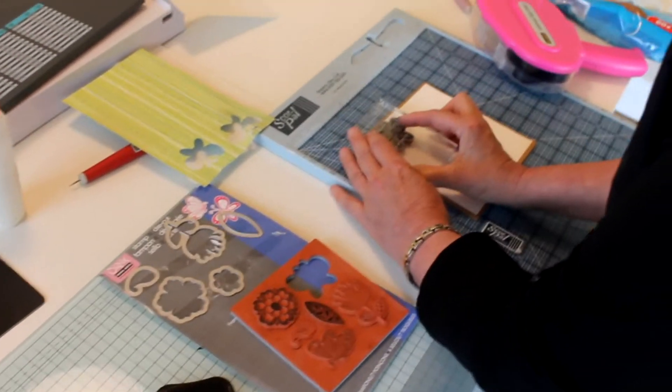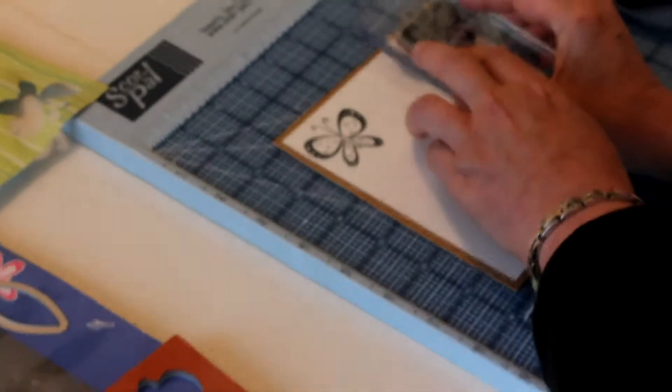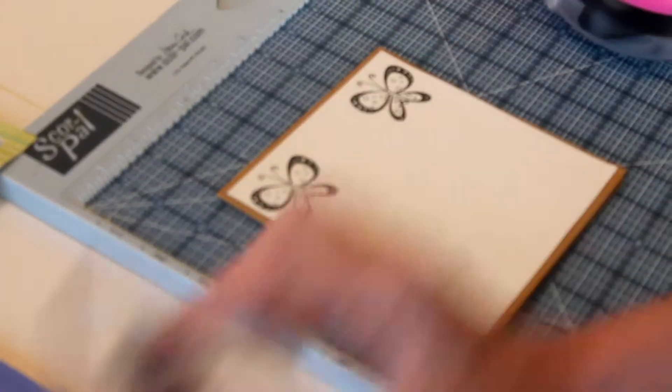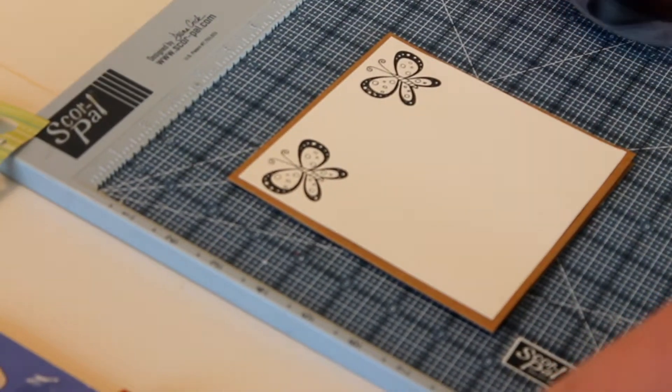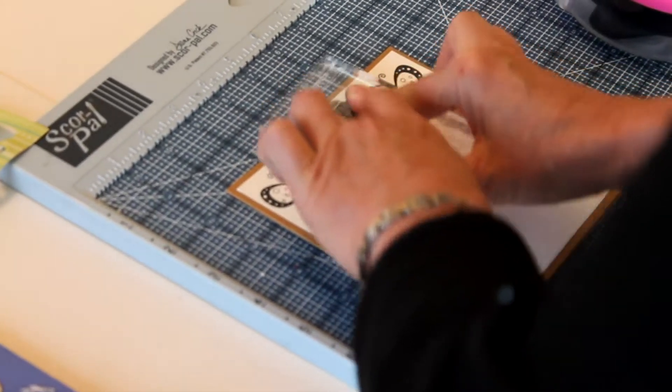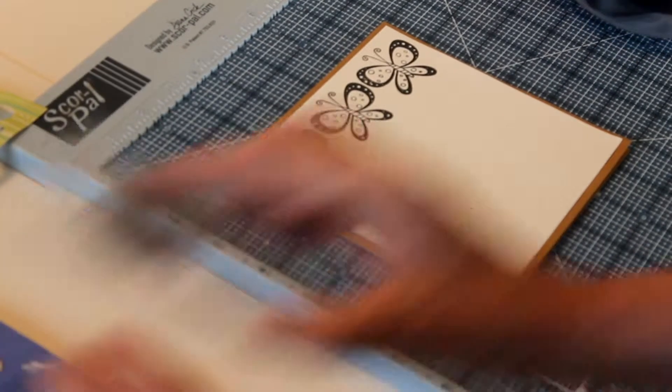I'm going to stamp one at this side and one at the other side, and that gives me room in the middle to stick the third one. Then I'm going to come down and do the same again underneath.